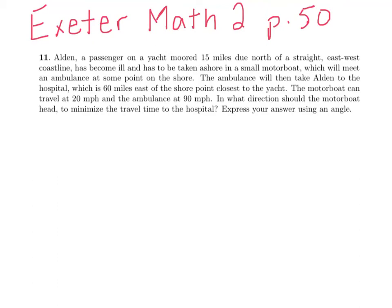Okay, so this is problem 11 on page 50. We have Alden is a passenger on a yacht moored 15 miles due north of a straight east-west coastline. I'm going to start drawing a picture. We have an east-west coastline, here's our coastline.